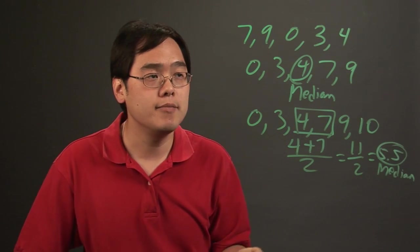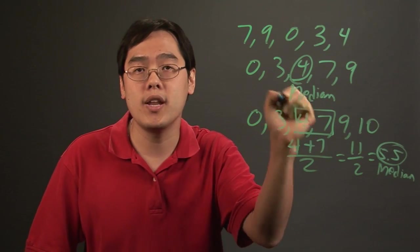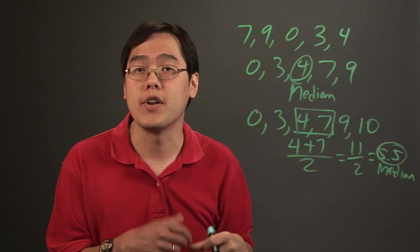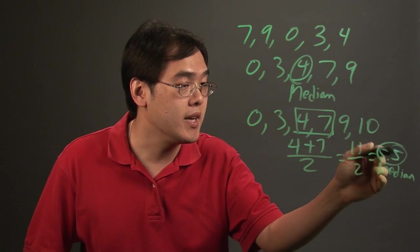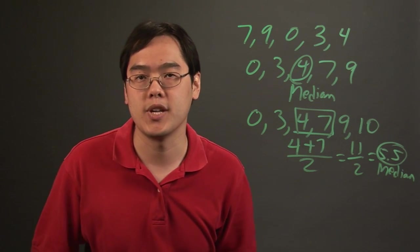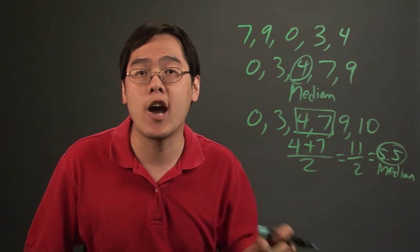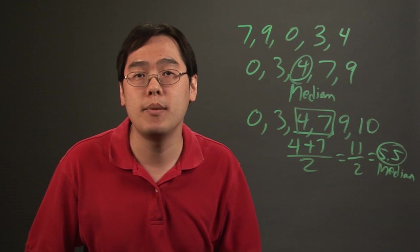So depending on the situation, the median is the number right in the middle if you have an odd number of figures, but if you have an even number of figures the median is the average of the middle two. I'm Jimmy Chang and that's how to algebraically find the median and midpoint.